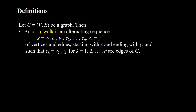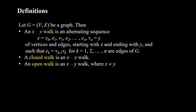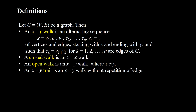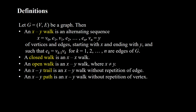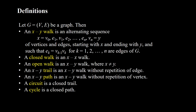The vertices and the edges do not have to be different, so some of them can be repeated. A closed walk is an X-X walk, so the starting and ending point are the same. An open walk is an X-Y walk where X and Y are different. An X-Y trail is an X-Y walk without repetition of edges — so vertices can be repeated but no repetition of edges. An X-Y path is an X-Y walk without repetition of vertices, which also implies no repetition of edges. A circuit is a closed trail, i.e., a trail where the starting and ending vertices are the same. A cycle is a closed path.